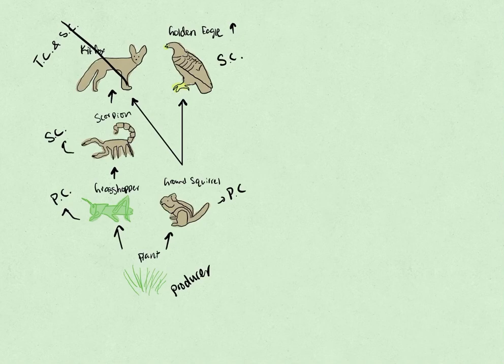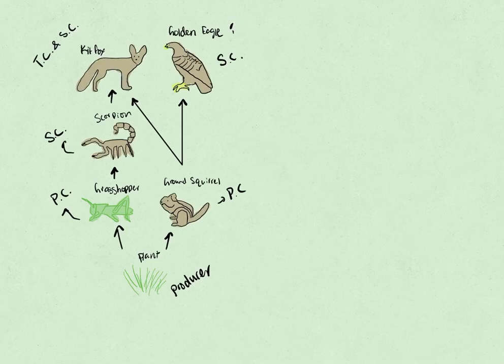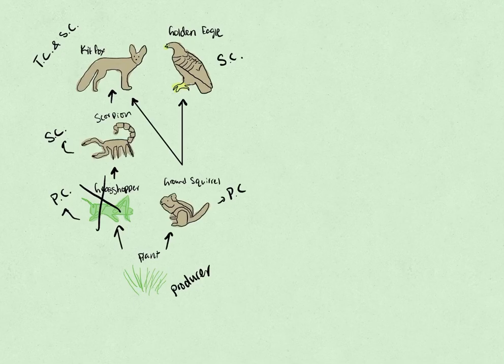And for example, if the grasshopper was gone, if we were to change up the scenario and say that the grasshopper was gone, that would change the whole balance of the situation, because the scorpions need to be able to learn to adapt, and so does the kit fox.